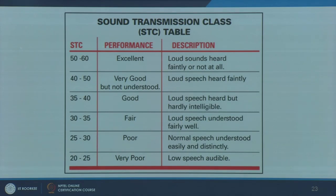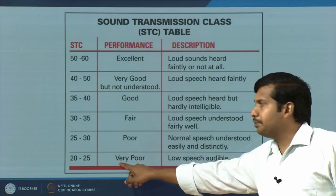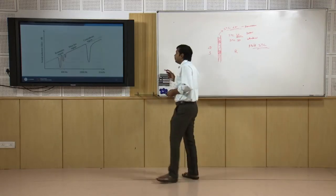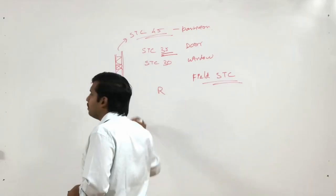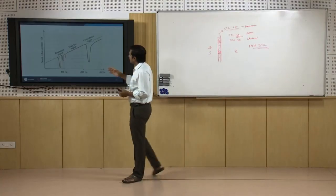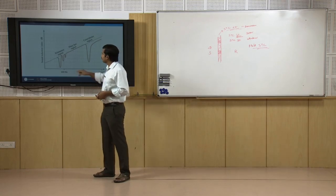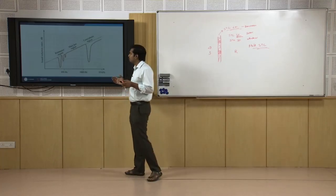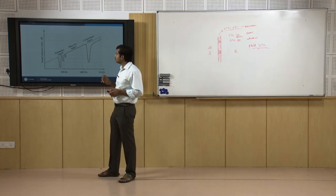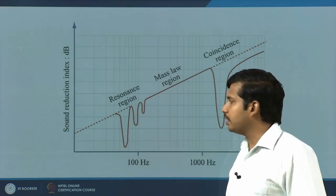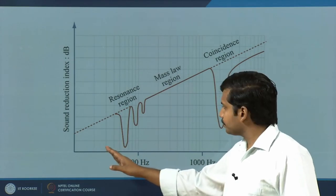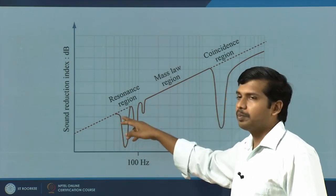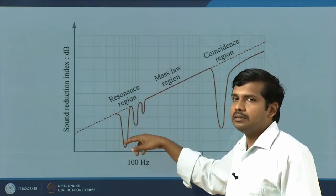If you have an STC between 20 to 25, speech between the source room and the receiver room will be audible to each other. For gypsum board or plywood panels, there are different frequency ranges where sound reduction is more effective. There is the mass law region where increasing density and thickness improves insulation. On the lower end is the resonant region where the material starts resonating to low frequencies — typically below 100 Hz — and in this region acoustic insulation is very poor and you cannot interpolate or extrapolate.